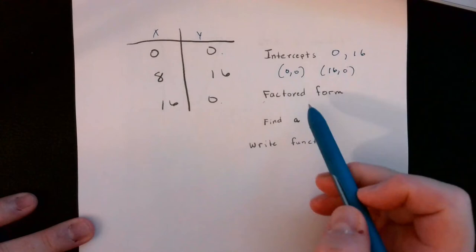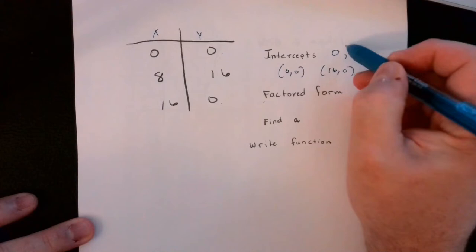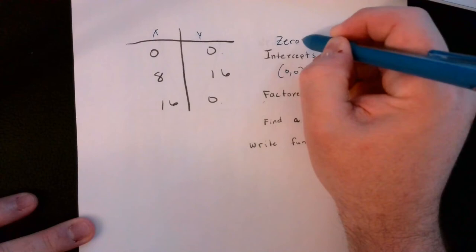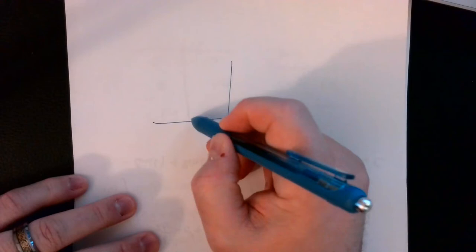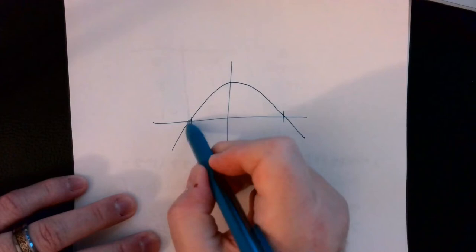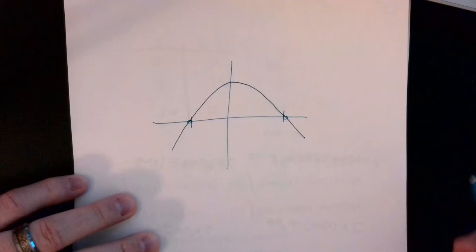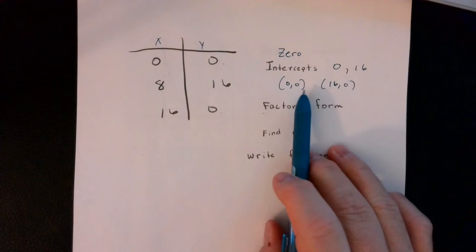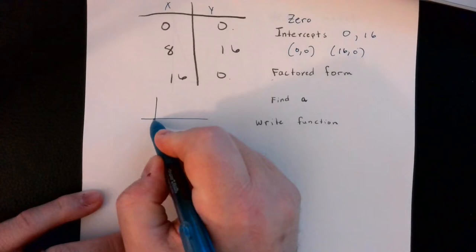You're then asked to write the function in factored form. Factored form comes from the intercepts — those are the zeros where the parabola crosses the x-axis. For x-intercepts at 0 and 16, the factors come from setting x minus 0 and x minus 16 equal to zero. So in factored form: y equals a times (x minus 0) times (x minus 16).